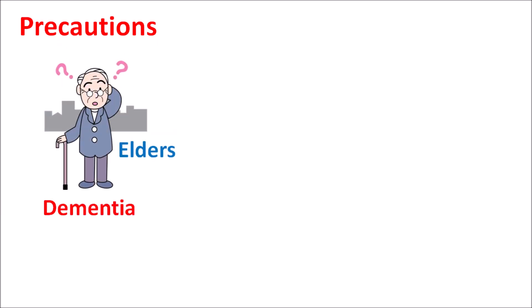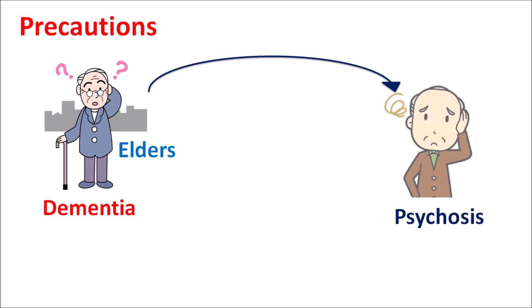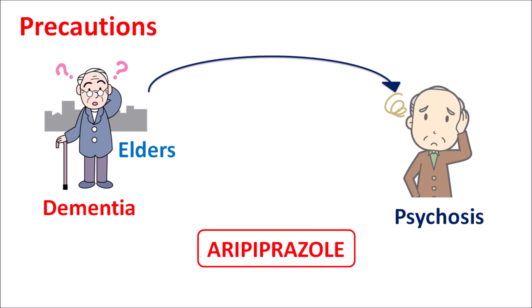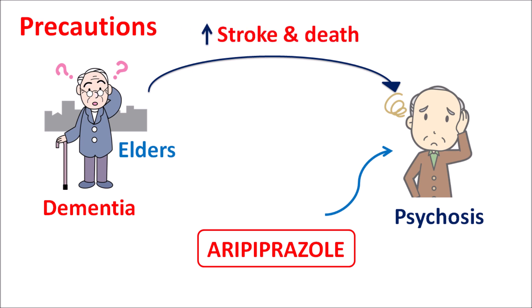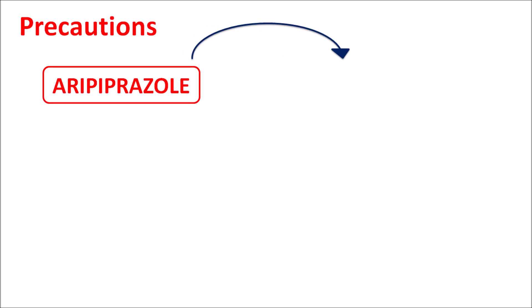The next important precaution is in elderly patients. The elderly may suffer with dementia and loss of memory, in which we can observe some psychotic behavior. So psychosis may be associated with dementia in elderly patients. If aripiprazole is used to control this psychosis, it may increase cerebrovascular complications, resulting in an increased risk of stroke and death. That is why this drug should be avoided in dementia-associated psychosis.